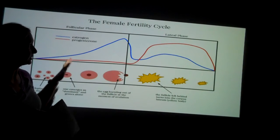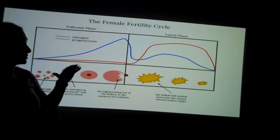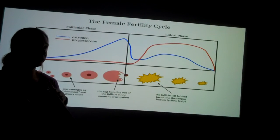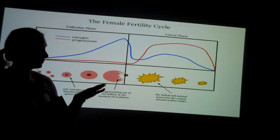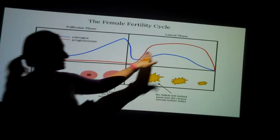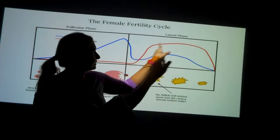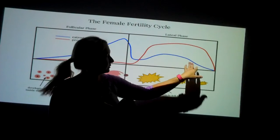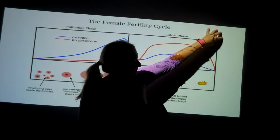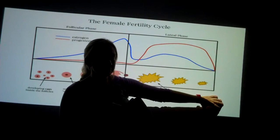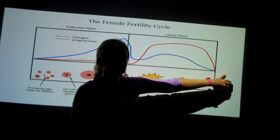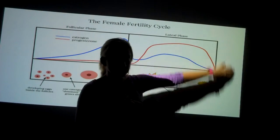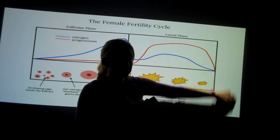Menstrual flow is not on this chart. What stimulates a lady to shed her uterine lining is the drop in estrogen and progesterone — that is at the end of this graph here. You'll see the drop in the progesterone and estrogen. So this end of this picture here would be the shedding of her uterine lining, the actual beginning of her menstrual flow, the first day of her new menstrual cycle.